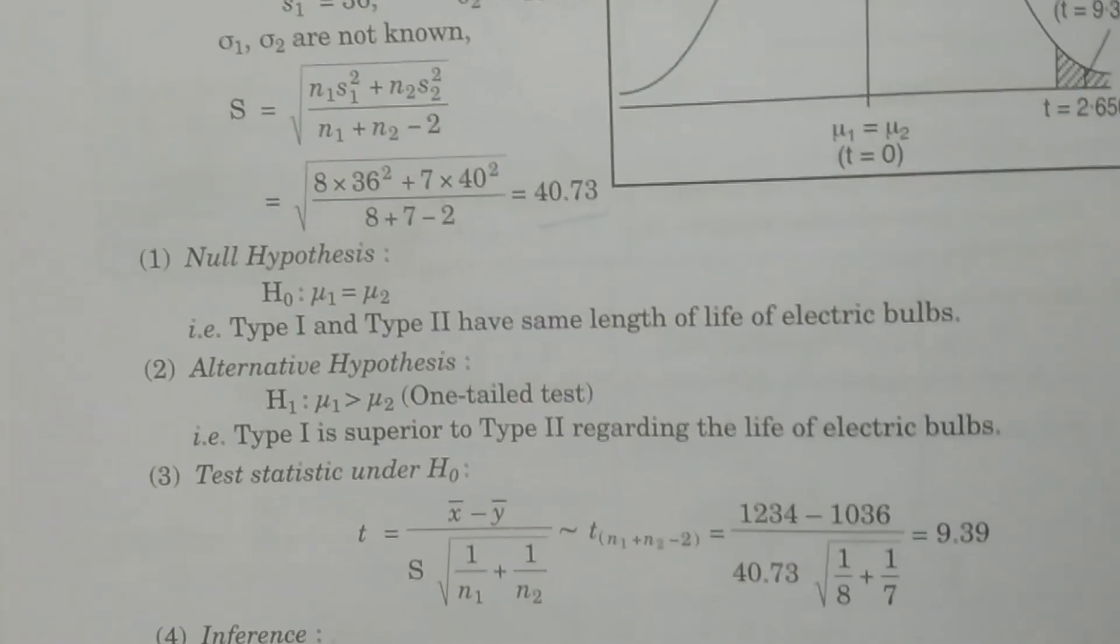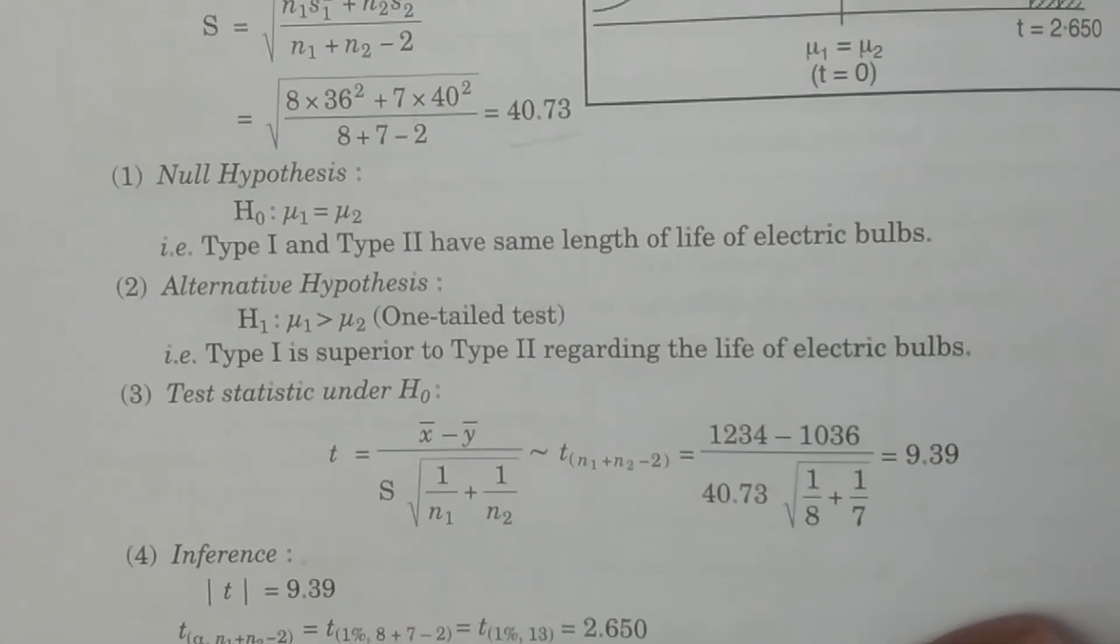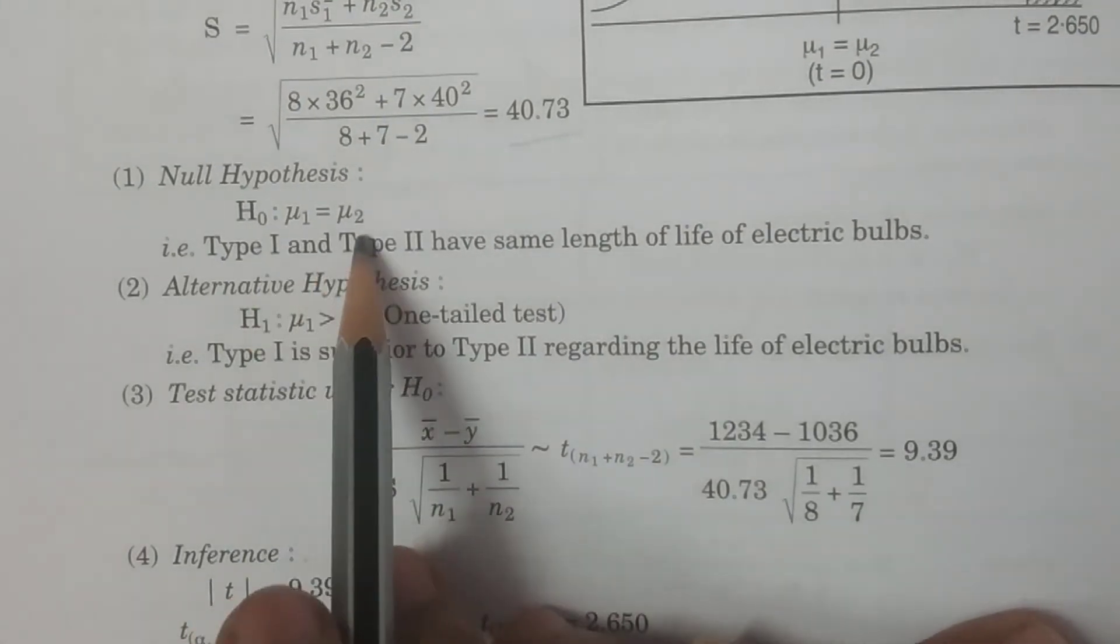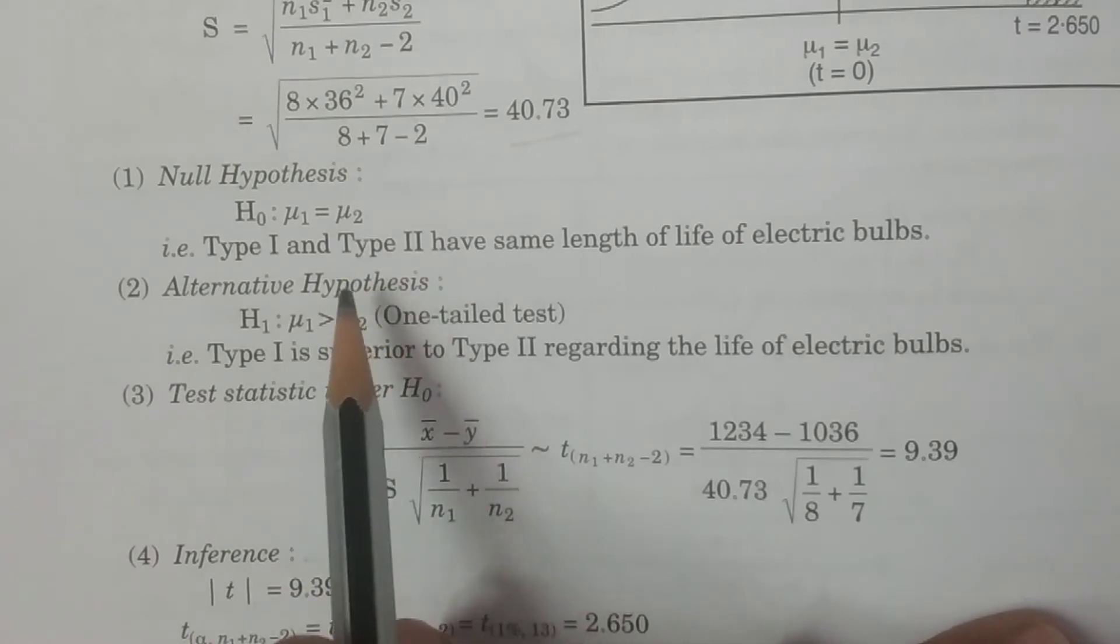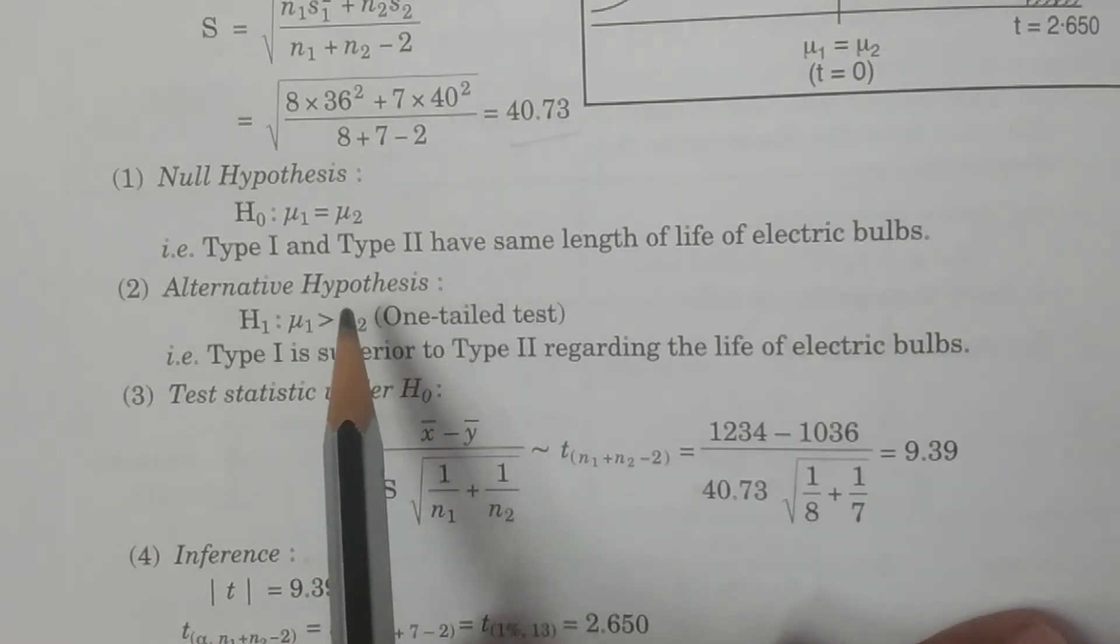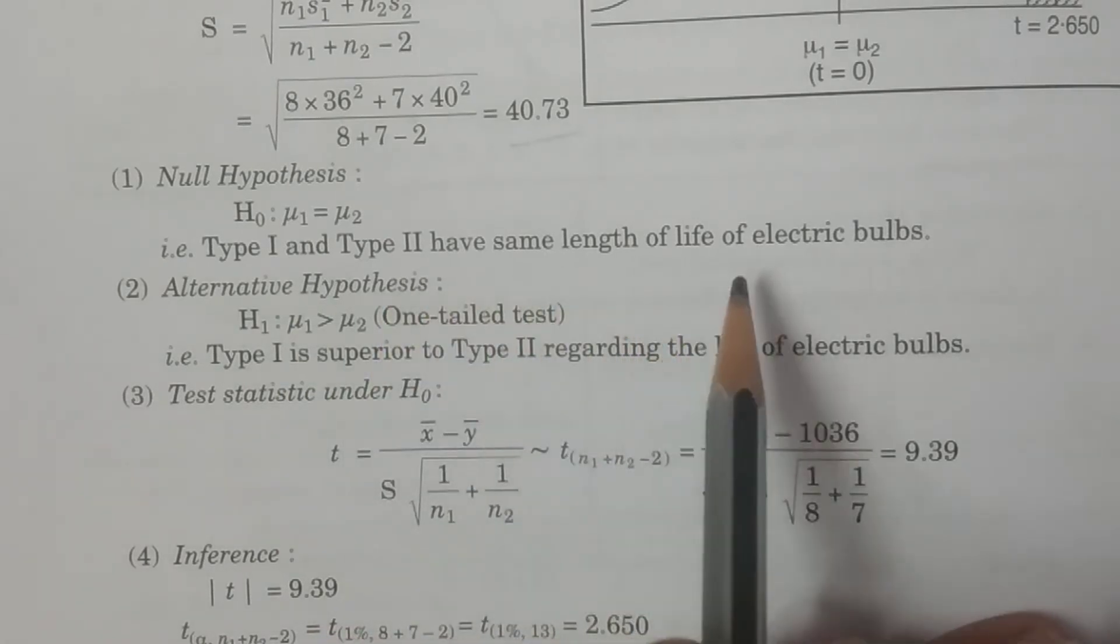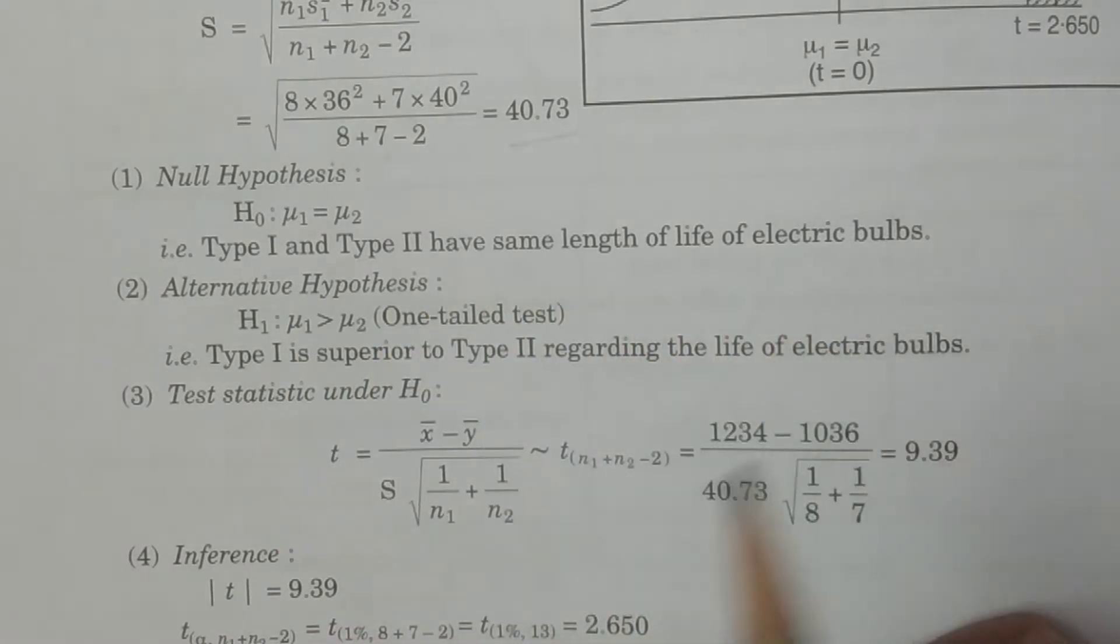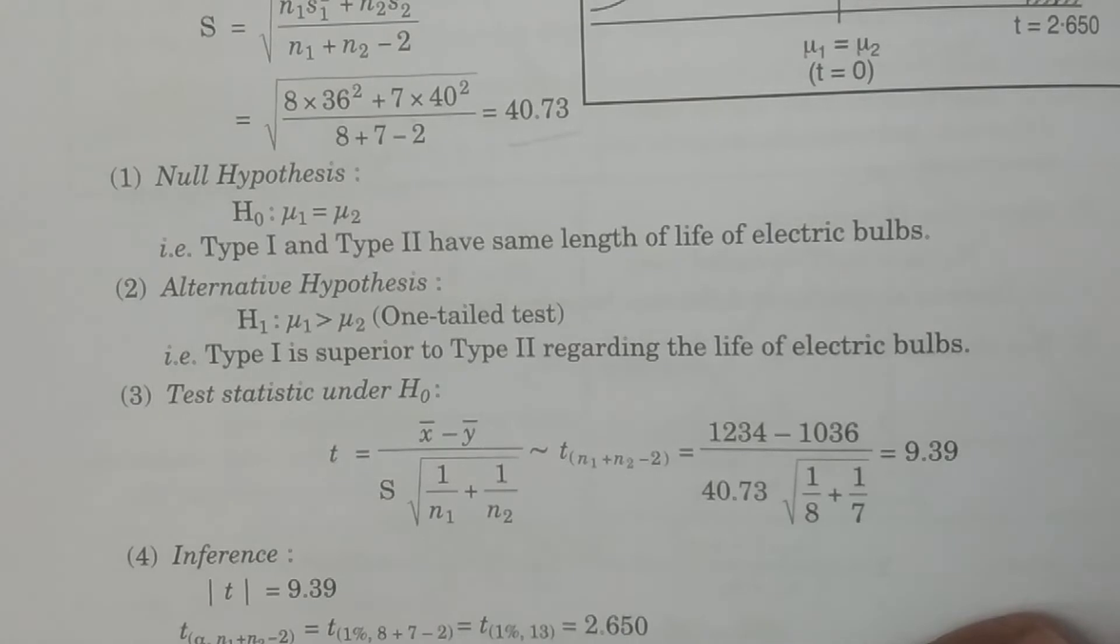So now we consider the regular points: the null hypothesis first of all, H₀: μ1 equals μ2. What does it mean? It means Type 1 and Type 2 have the same length of life of electrical bulbs. So the two types of electrical bulbs are giving the same life. That is our null hypothesis with no difference.